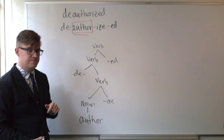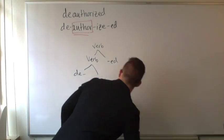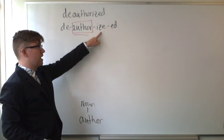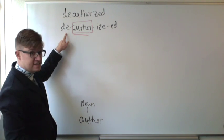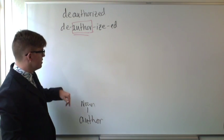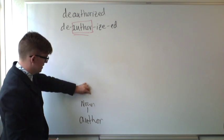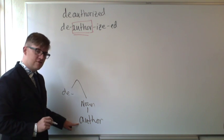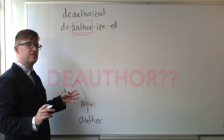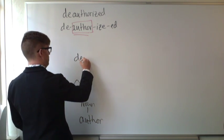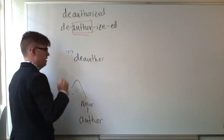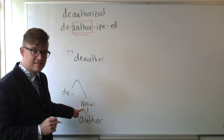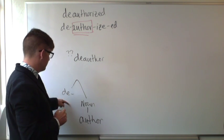Now you might be wondering: how can you tell at this point whether you have to combine with '-ize' first or with 'de-' first? Well, in this case the choice is pretty straightforward, because if we combine with 'de-' first, then the hypothetical word that we get is 'de-author', which doesn't seem like a word. Furthermore, 'de-' doesn't combine with things that are nouns.